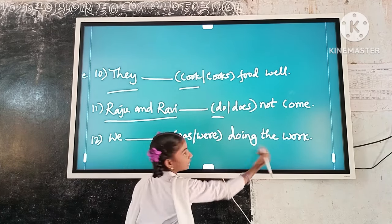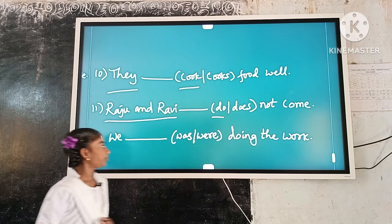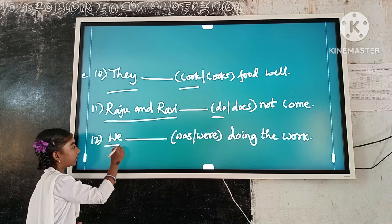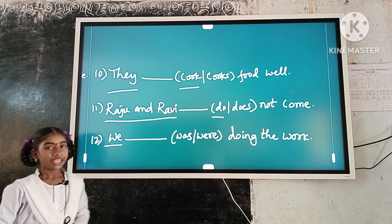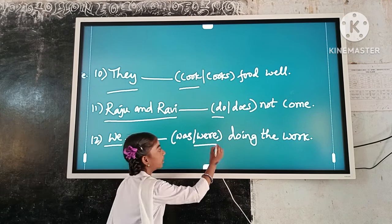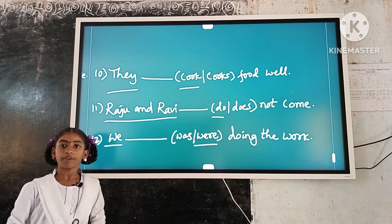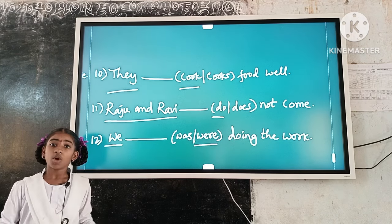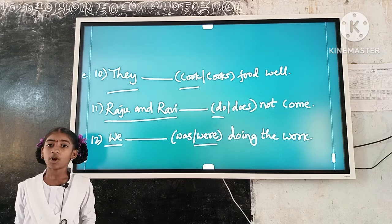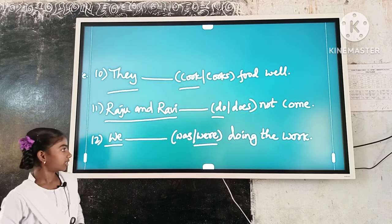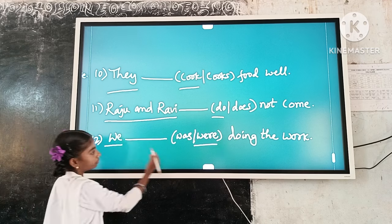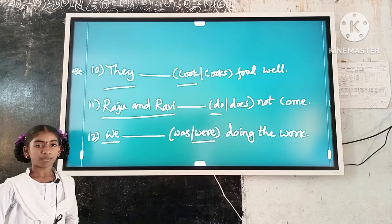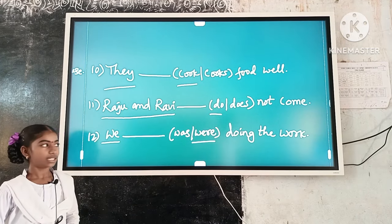Example number 12: We dash doing the work. Here, the subject is plural. 'Were' is a plural verb form. So, plural subject and plural verb form agree. The answer is: We were doing the work.